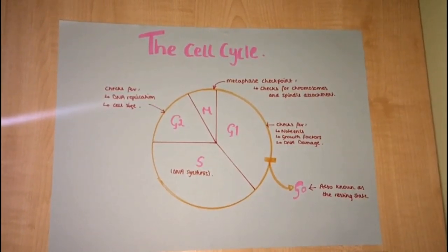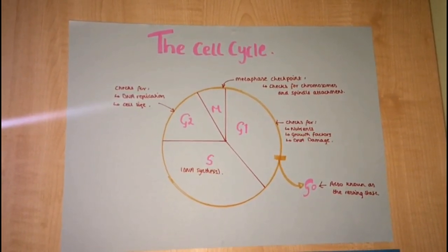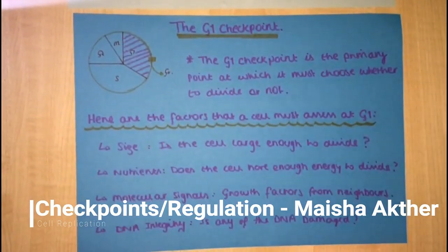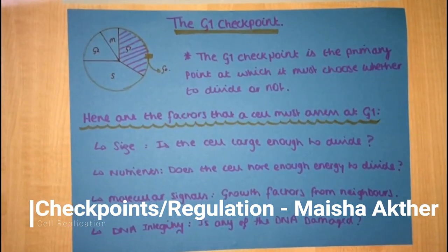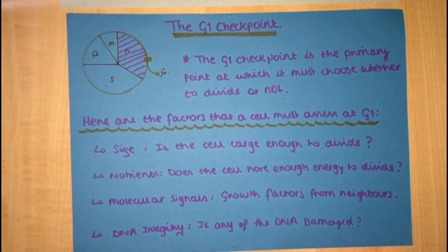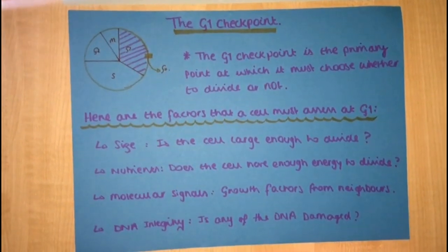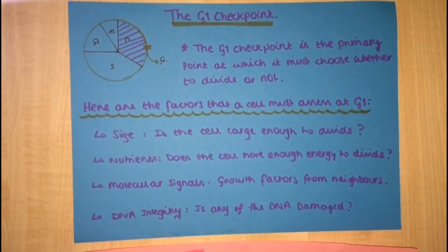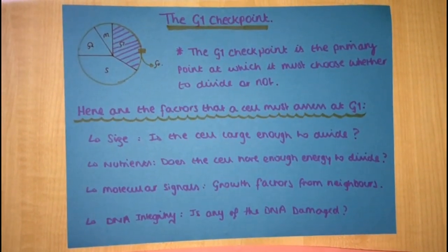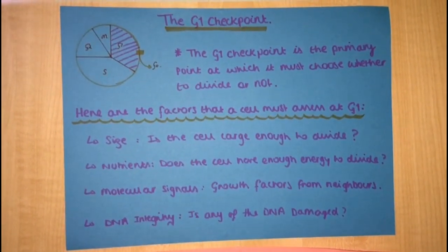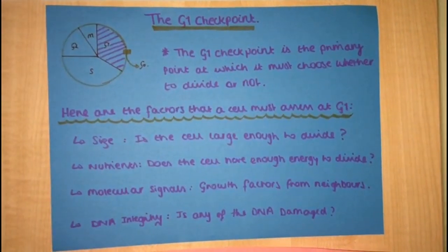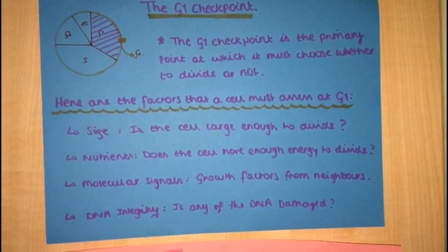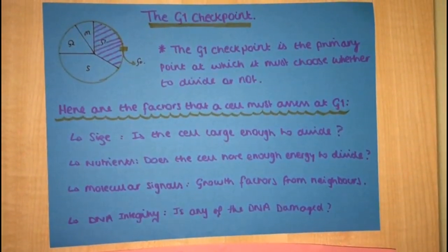In this part of the revision guide, I will be discussing the different checkpoints located within the cell cycle. Firstly, we have the G1 checkpoint. The G1 checkpoint is the primary point at which the cell must choose whether to divide or not. Here are the factors that a cell must assess at the G1 checkpoint: Size — is the cell large enough to divide? Nutrients — does the cell have enough energy to divide? Molecular signals — growth factors from neighbors. DNA integrity — is any of the DNA damaged?